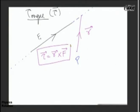When we write torque equal to I alpha, then the point has to be either a point at rest or the center of mass of the body. I will come to that case later.